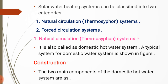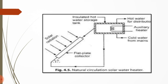This classification depends on the use of hot water obtained from the system. In a natural circulation system, the hot water is generally used for domestic purposes. In a forced circulation system, the hot water is used for industrial purposes. A typical domestic hot water system is shown in the figure — this is the natural circulation solar water heater from which we can obtain hot water.